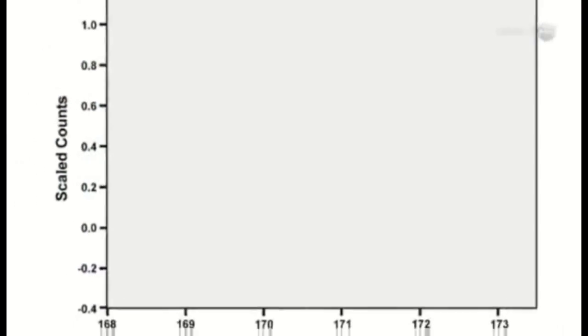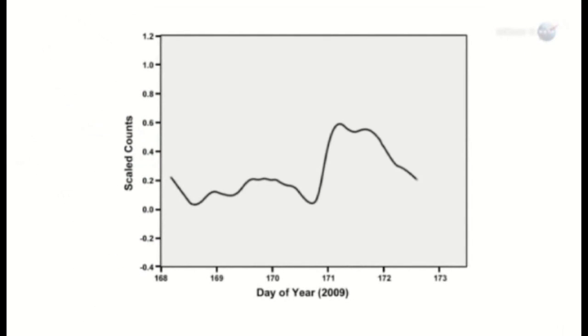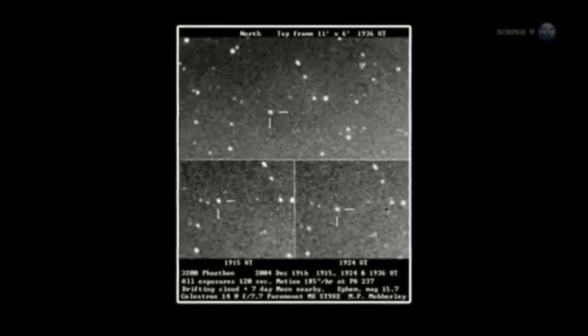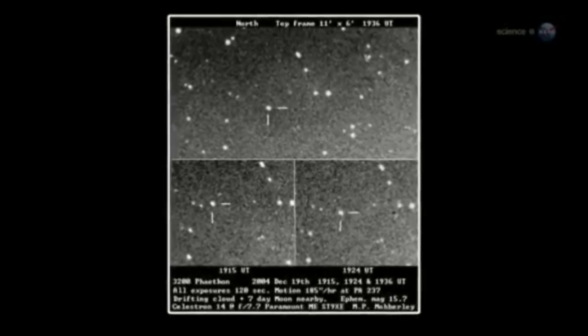3200 Phaethon unexpectedly brightened by a factor of two, they wrote. The most likely explanation is that Phaethon ejected dust, perhaps in response to a breakdown of surface rocks through thermal fracture and decomposition cracking of hydrated minerals, in the intense heat of the Sun. So, according to the STEREO observations, 3200 Phaethon does behave like a rock comet.